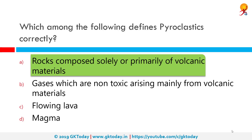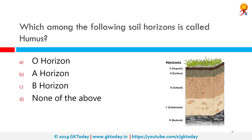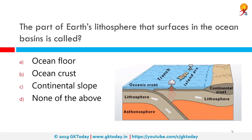Which among the following soil horizons is called humus? The correct answer is the O horizon, which is the uppermost layer, also called the organic horizon.